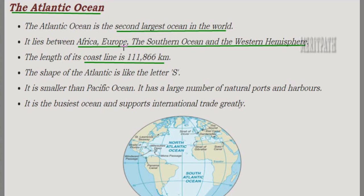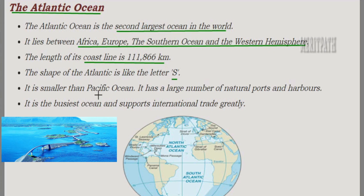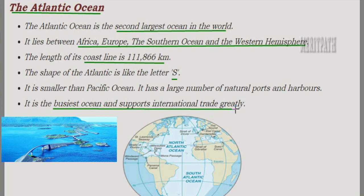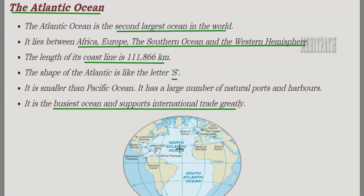The Atlantic Ocean is the second largest ocean in the world after the Pacific Ocean. It is located between Africa, Europe, the Southern Ocean, and the Western Hemisphere, with a coastline length of 11,866 kilometers. The shape of the Atlantic Ocean resembles the letter S. Although smaller than the Pacific Ocean, it has more ports and harbors and is the busiest ocean in terms of trade.